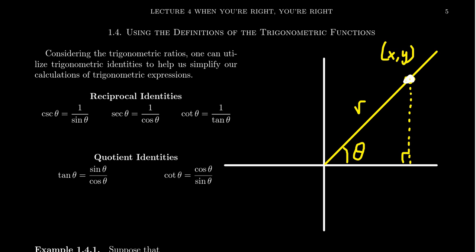Up to proportionality, it doesn't matter which point you choose as long as you don't choose the origin. So consider this diagram here. We have a terminal point x, y for some angle theta. By the Pythagorean equation, since every angle in standard position does form a right triangle, the distance between the origin and the point — we'll call that r — can be found using x squared plus y squared equals r squared.